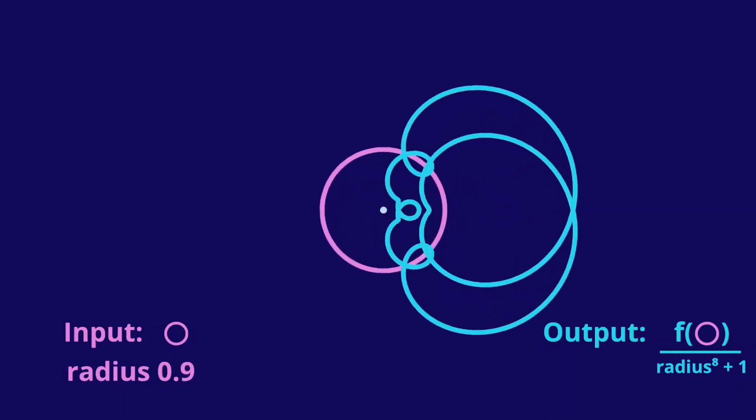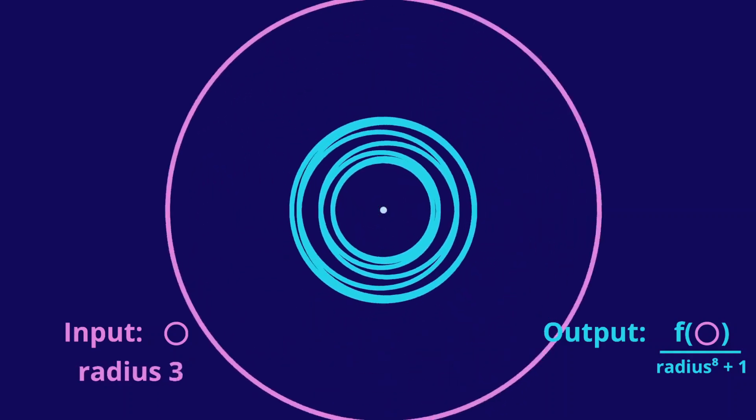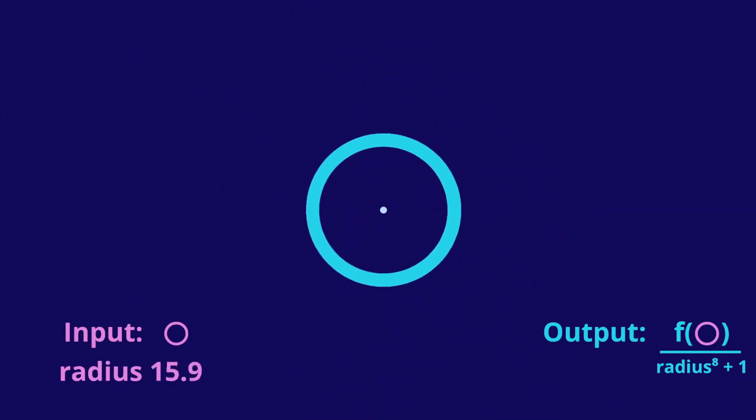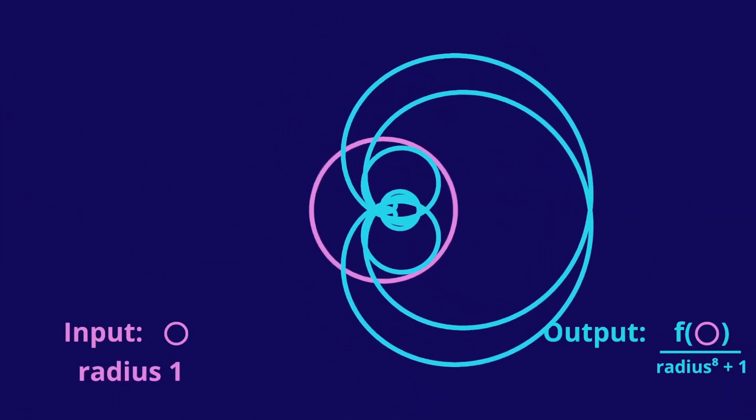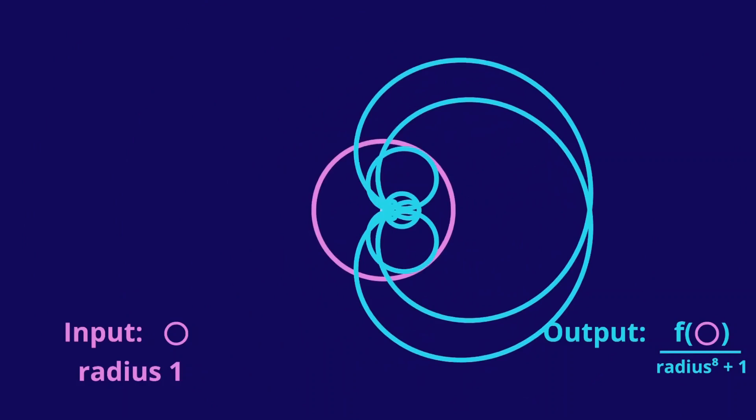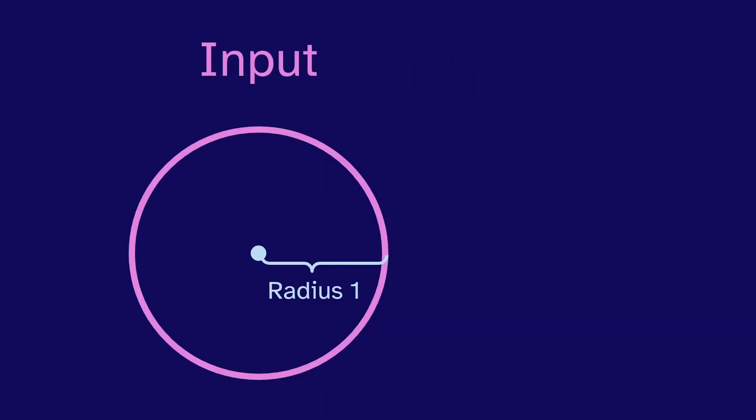And we notice, because our input is always a closed loop, the output is also always a closed loop. And this frame here is the loopiest. So let's focus on that. The input for this frame is the circle with radius 1, which is called the unit circle.